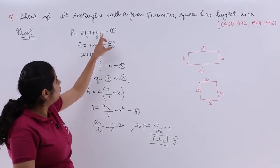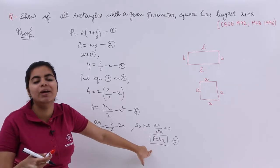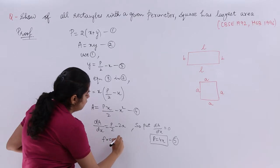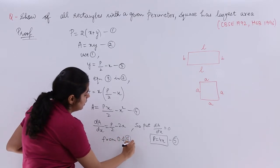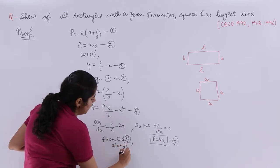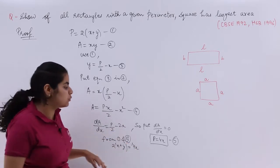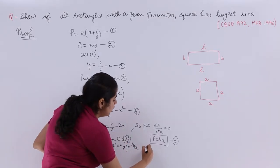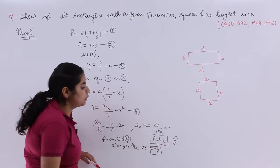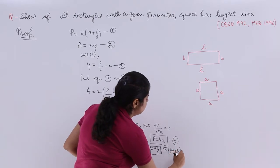Now, compare equation number 1 and 5. It says P equals 4X. It says P equals 2X plus 2Y. So from equations 1 and 5, the comparison says 2X plus 2Y equals 4X. Or in short, X equals Y. X equals Y means all sides are equal. So it is coming out to be a square.